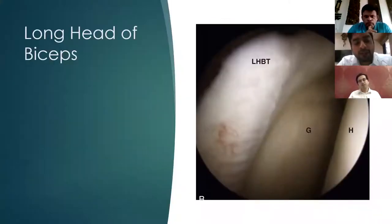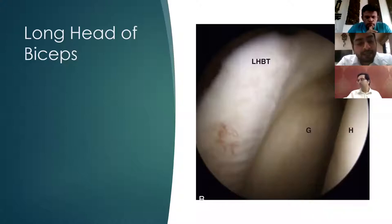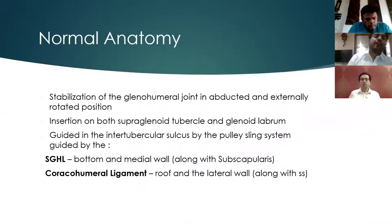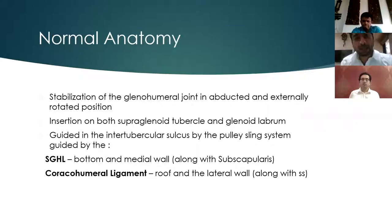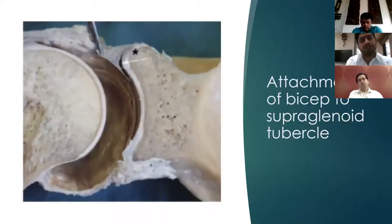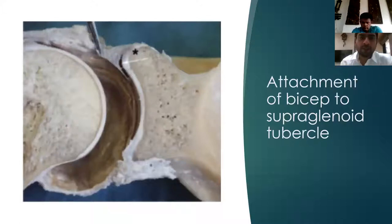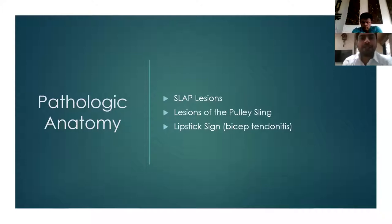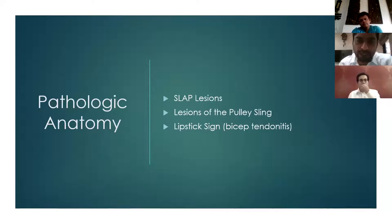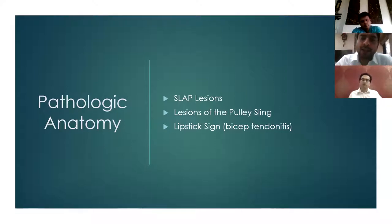The long head of biceps originates from the supraglenoid tubercle and superior labrum, extending distally into the bicipital groove along the proximal humerus. It is stabilized in the groove by the transverse humeral ligament. It is guided into the tubercular groove by a pulley sling system surrounded by the SGHL at the bottom and medial wall along with the subscapularis; the coracohumeral ligament forms the roof and lateral wall along with the supraspinatus. Pathological anatomy includes SLAP lesions, lesions of the pulley sling, and the lipstick sign — subluxation of the biceps tendon in the intertubercular sulcus leading to retraction and biceps tendonitis.